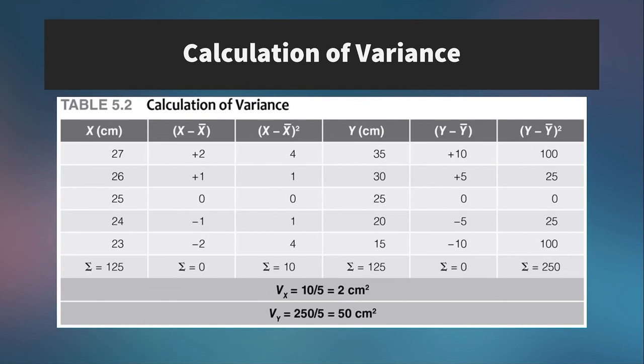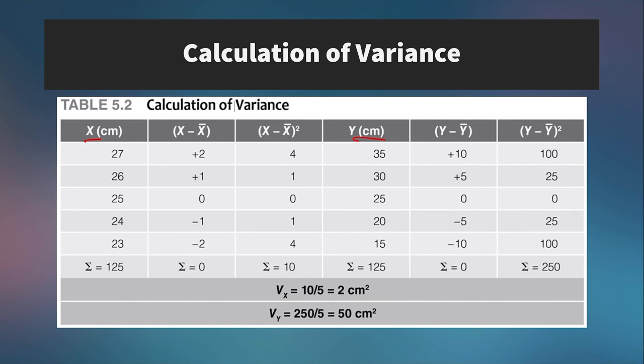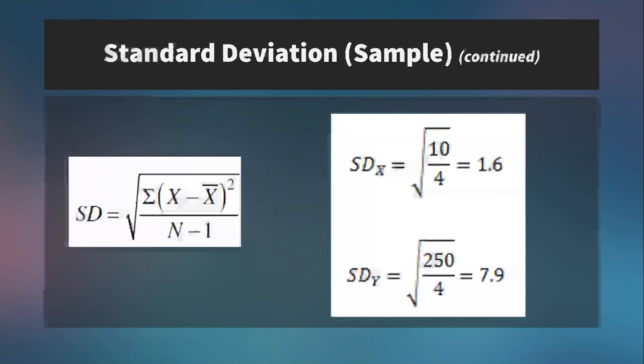So, going back to our original example of the X values and the Y values, we've already determined that the Y values have a much greater variance. But what is the exact standard deviation of each of these groups of numbers? So, here we have the variance scores. Remember, that was 2 and 50 for the X and the Y values. Now, let's compute standard deviation.